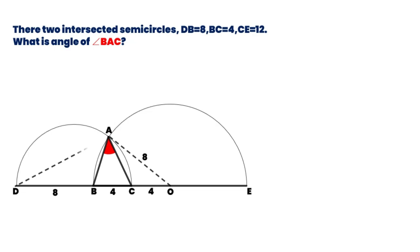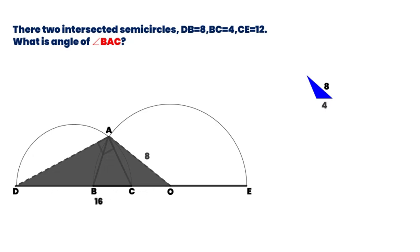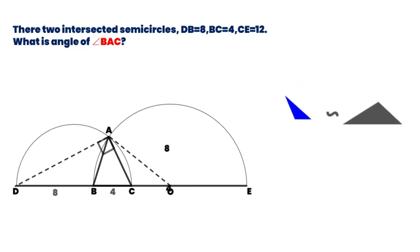Then connect DA. CD is the diameter of the small circle, so we can get angle DAC equal to 90 degrees. In triangle ACO, the two sides are 8 and 4. In triangle ADO, the two sides are 8 and 16.